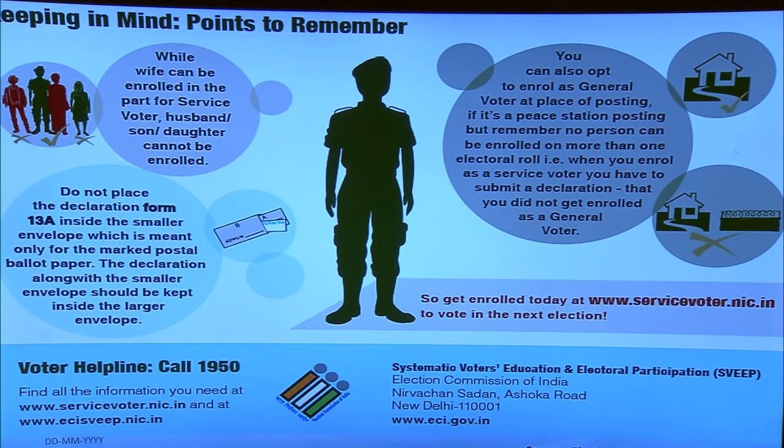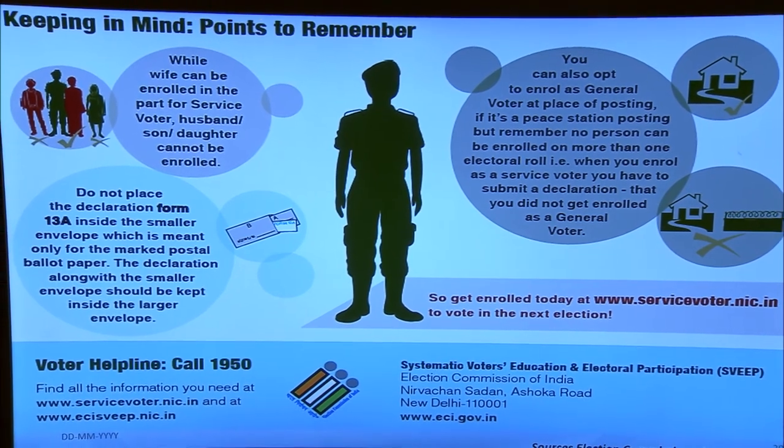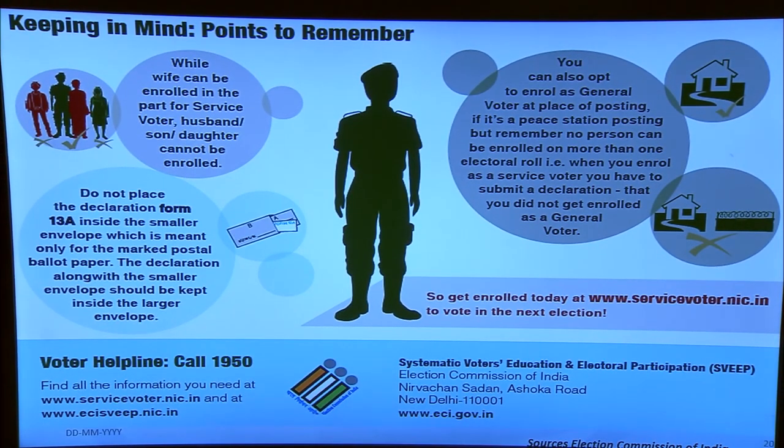Common mistakes that can lead to rejection of your vote: first, using any mark other than a tick mark or cross; second, submitting incomplete forms 2, 2A, or 3 during registration — incomplete forms will be rejected and you may not get registered; third, not signing form 13C (the outer envelope) — absence of signature is also a reason for rejection. We look forward to your participation in the upcoming elections. Thank you.